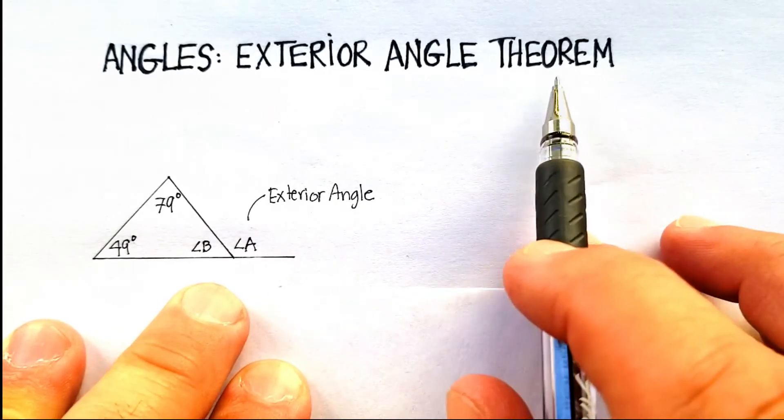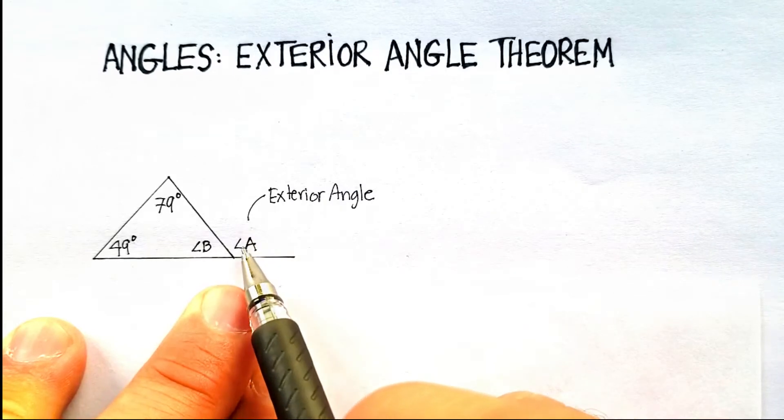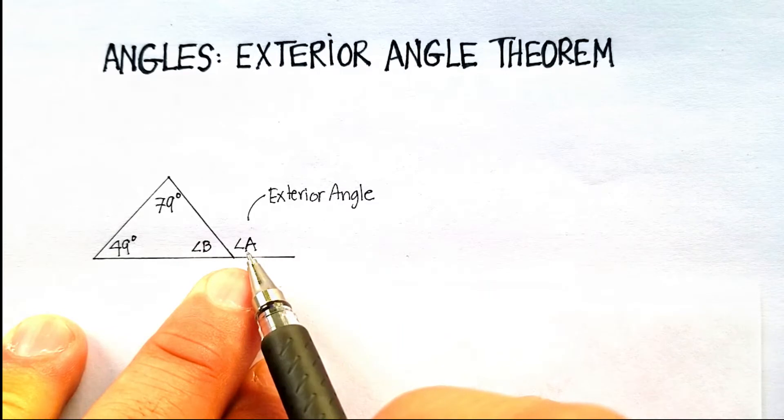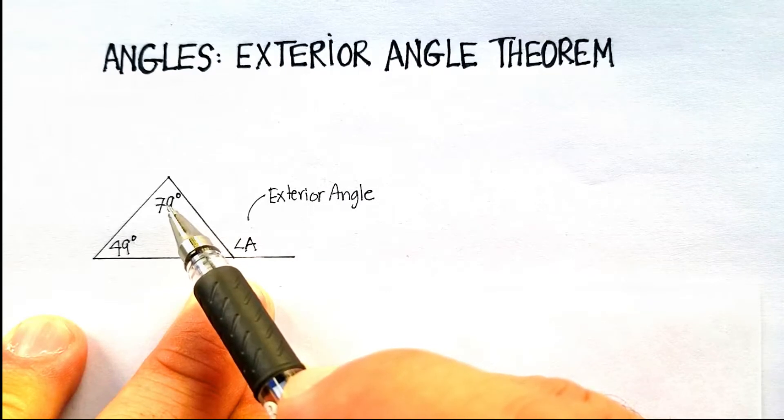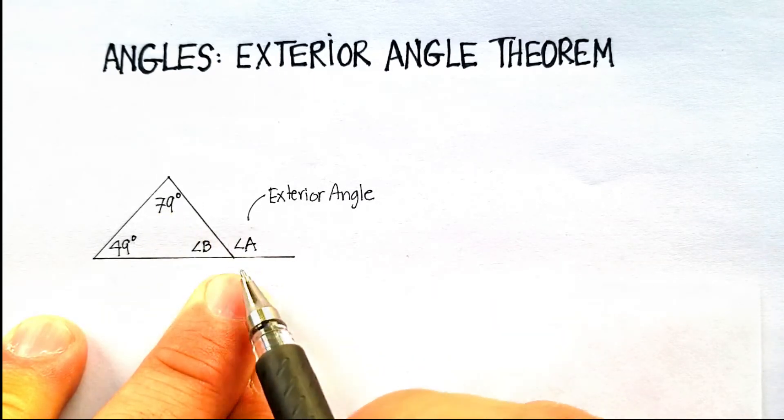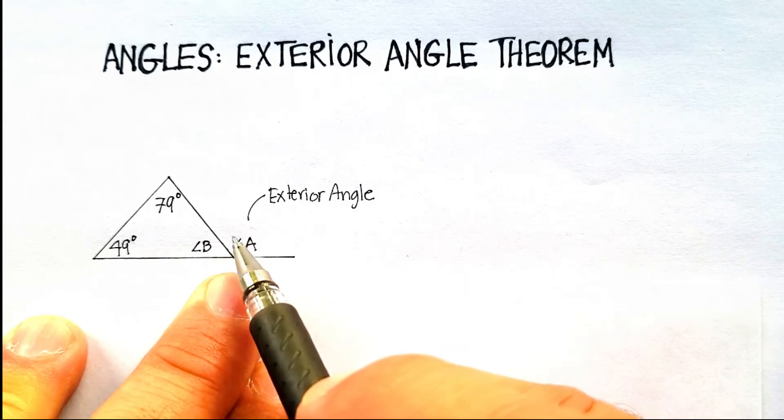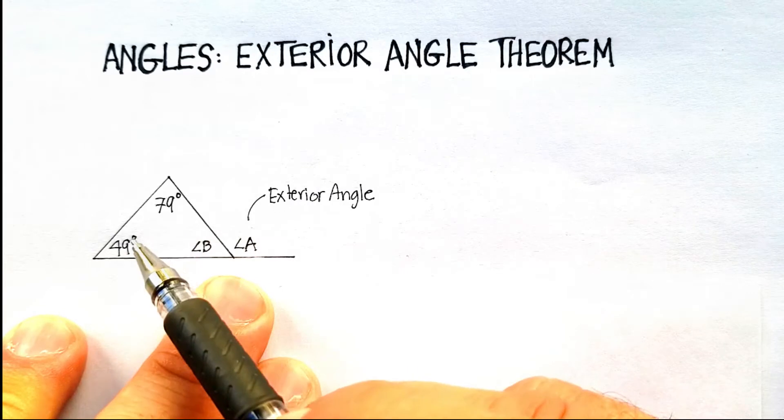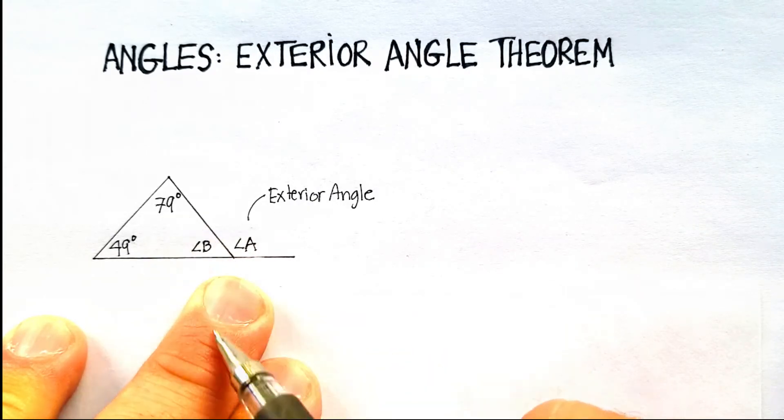But here's the exterior angle theorem that is more important. Angle A will always be equal to the sum of the two opposite angles. Let me say that again. The exterior angle for this side will always be equal to the sum of the two angles on the opposite side of the triangle.